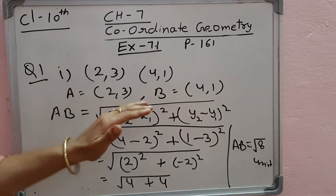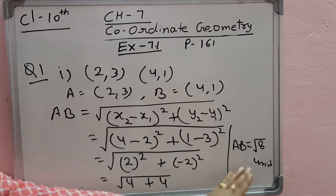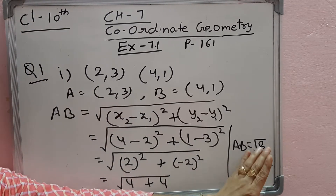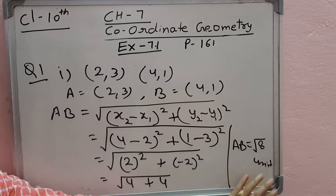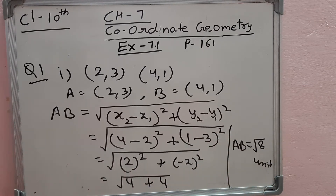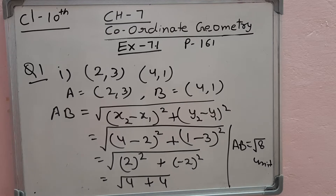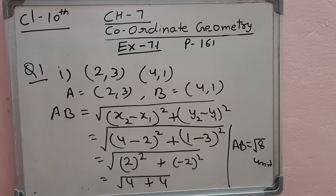The distance between A and B is under root of 8 units. Similarly, you can find part 2 and part 3 on your own. Now question number 2: find the distance between the points (0, 0) and (36, 15).